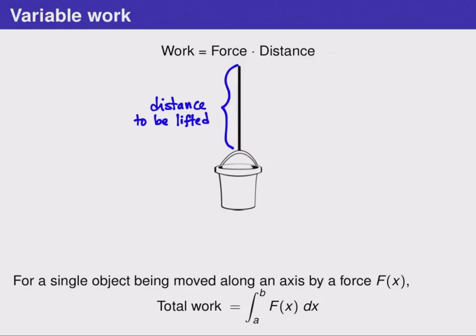Our first one is work, which is defined as force times distance. For example, imagine lifting a bucket of water a certain distance. If the bucket has a certain constant mass of water, it has a constant weight, which is the same as a constant force. If we multiplied this by the distance that we wanted to lift it, we would get the work required to lift that water that distance.